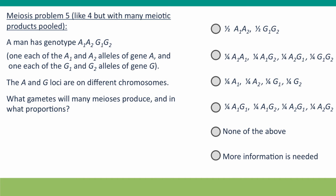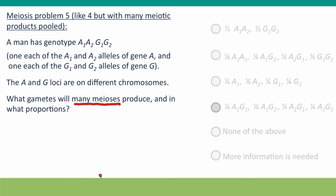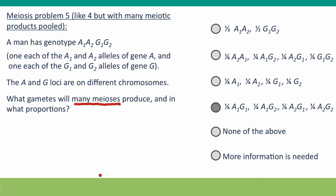This next problem is the same as the previous one with one difference: previously we were thinking about a single meiosis, now we're thinking about many meioses. The situation is the same, but the answer is different. Now we know the outcome: we're going to get a quarter of each of four different genotypes. Because with many meioses, we can be confident that about half the time a meiosis will produce two gametes with genotype A1G1 and two with genotype A2G2, and the other half of the time two A1G2 and two A2G1.